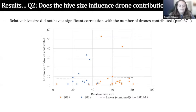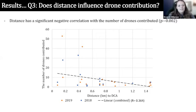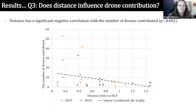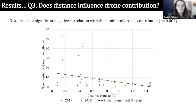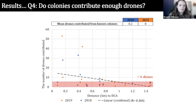For the second question — did hive size influence drone contribution for colonies that contributed at least one drone? — we found no significant correlation. But excitingly, we did find that distance influenced drone contribution. As a colony was further away from the sampled DCA, they contributed fewer drones. The significance is that colonies at greater distances likely contribute more to non-detection errors, where sib ships are wrongly assigned by the COLONY program.